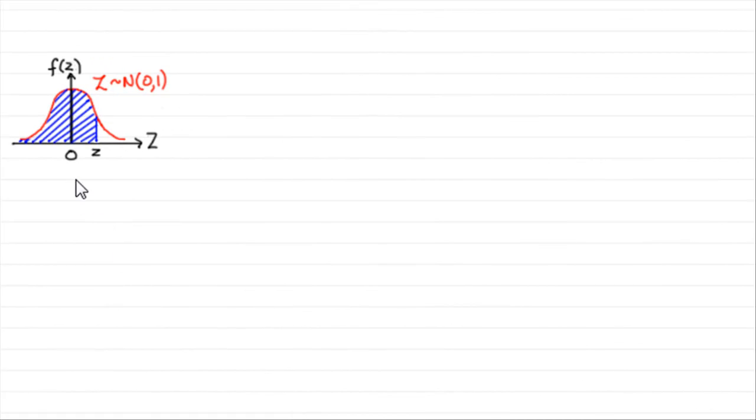Hi, now in an earlier tutorial I showed you how any normal distribution could be transformed to this special normal distribution. It's called the standard normal distribution. It has a mean of 0 and a variance of 1. And what z represented was the number of standard deviations above or below the mean.